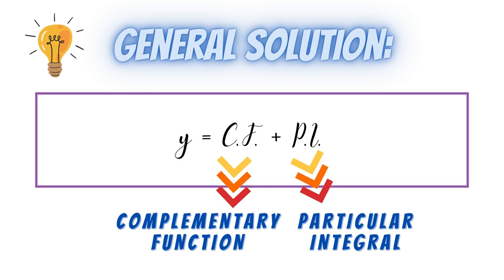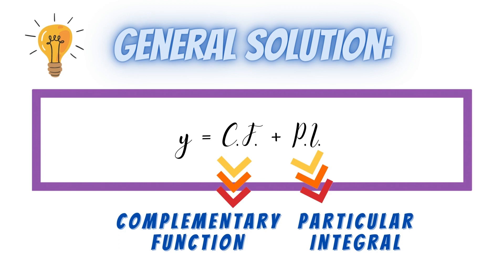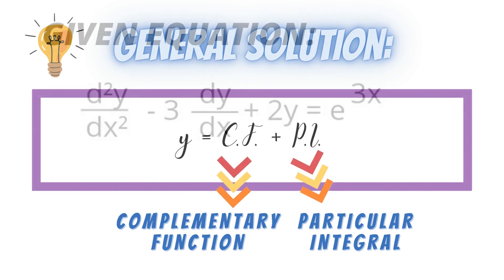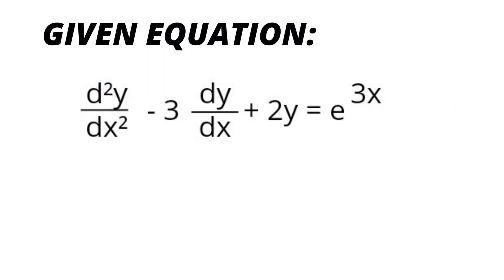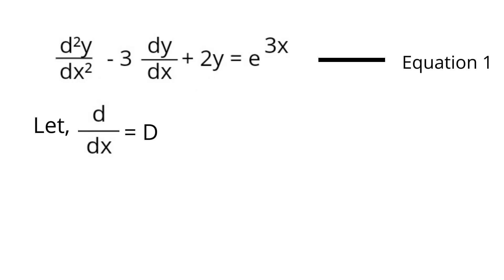We have to determine the complementary function and the particular integral for this equation to get the solution. Firstly, we will have to change the way this equation is written. We write the given equation as d²y/dx² minus 3dy/dx plus 2y is equal to e raised to the power 3x. Let us name this as equation number 1.